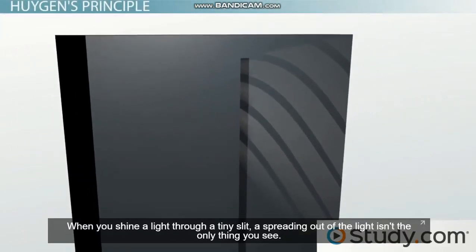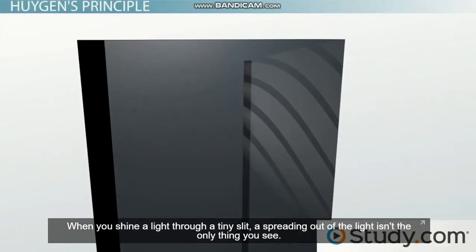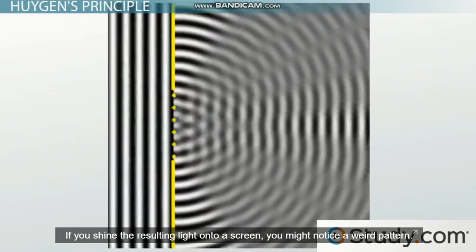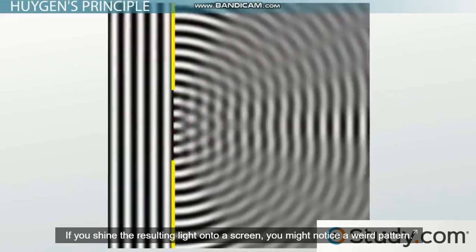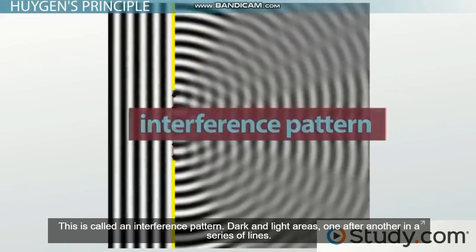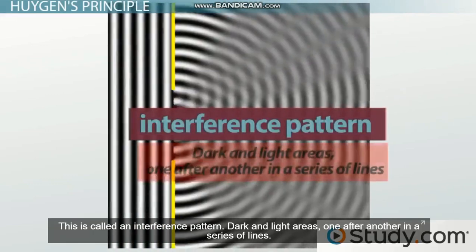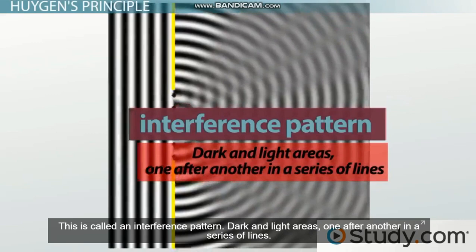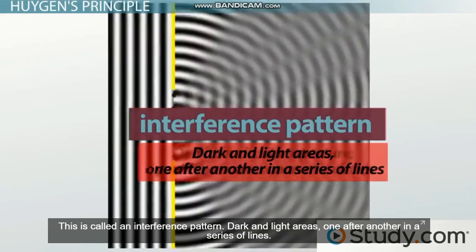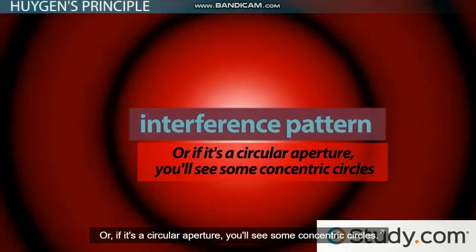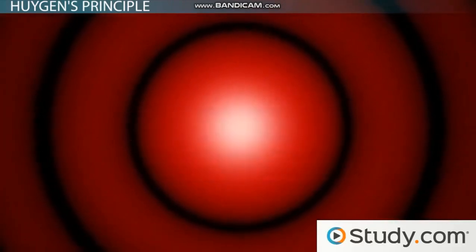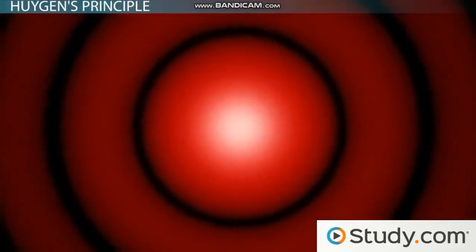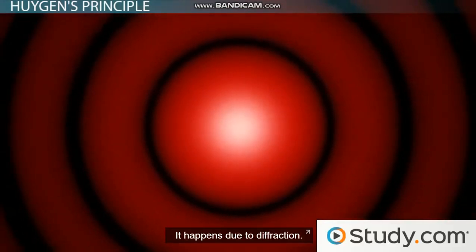When you shine a light through a tiny slit, a spreading out of the light isn't the only thing you see. If you shine the resulting light onto a screen, you might notice a weird pattern — this is called an interference pattern. Dark and light areas one after another in a series of lines. Or if it's a circular aperture, a circular hole, you'll see some concentric circles. It looks something like this, and happens due to diffraction.